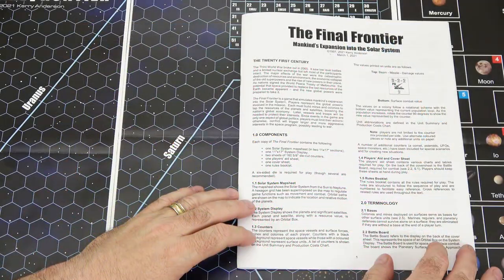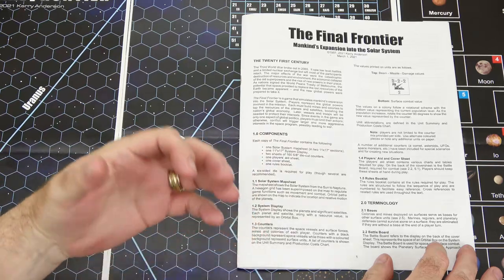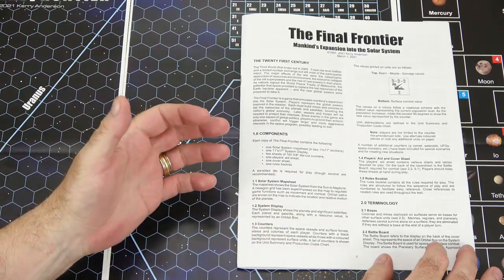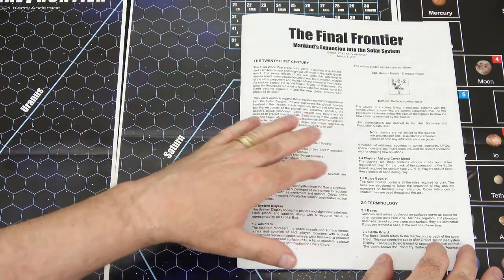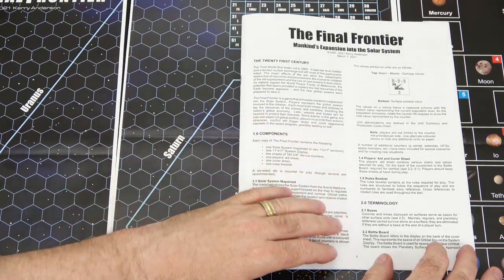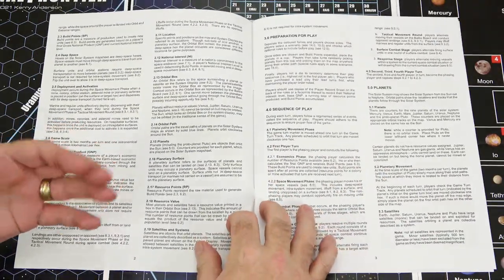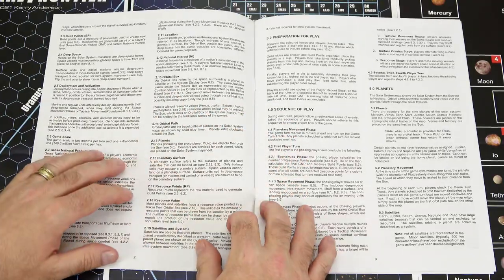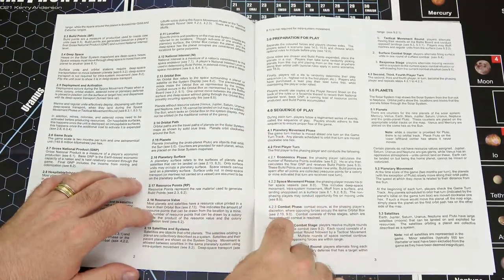And we'll take a look at the rules. This is a 16-page rulebook. The first bit here, the 21st century, that's a little background fluff that's going to set the table for the universe that the game is set in. Then we have the components, how to read your counters, and then how to use your play aids, as well as the terminology that you'll be using in the game. And you're going to need to understand the definitions of all these terms because they're covered in the rules. They're all explained to you nice and clearly here.